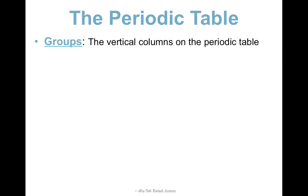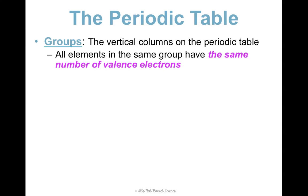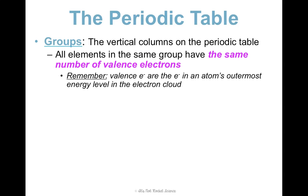First, let's talk about the groups. These are the vertical columns on the periodic table. They're called groups, and some periodic tables actually say groups on there so you can see that. All elements in the same group — so in the same column — have the same number of valence electrons. Valence electrons are the electrons in an atom's outermost energy level in their electron cloud. This is essential because it affects how atoms will bond together to form compounds, which we'll talk about in our next unit.